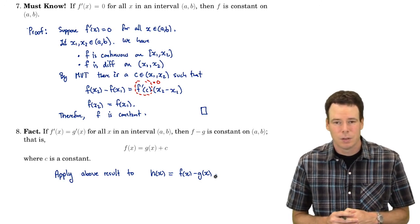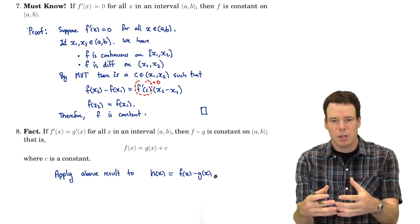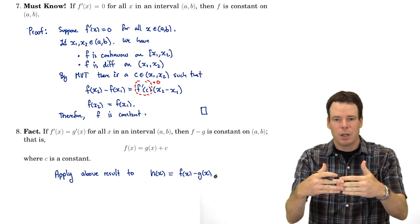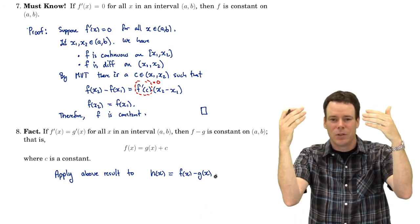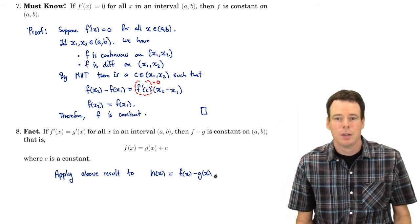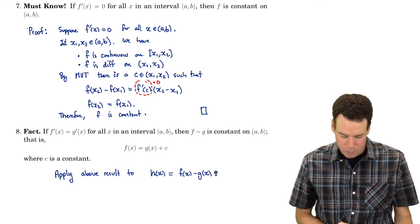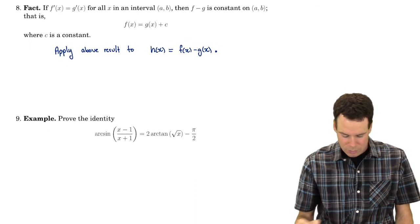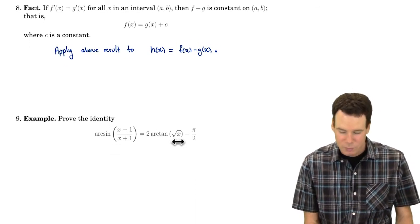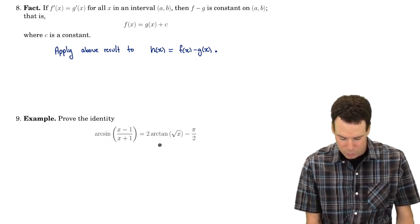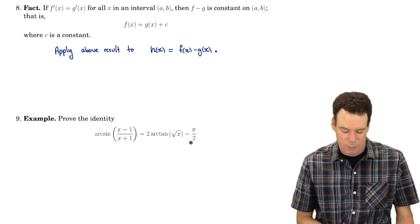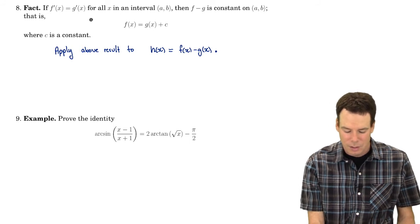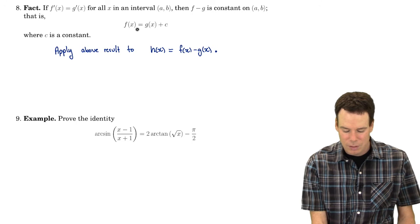This is a result used in integral calculus all the time. In integral calculus you start with a function and find an antiderivative — a function whose derivative is the one you started with. This result tells us that if you find one antiderivative, you can get any antiderivative by adding an arbitrary constant. Now let's see how to apply this to an interesting example: we can use it to prove trigonometric identities. We want to prove that arcsin((x-1)/(x+1)) = 2·arctan(√x) - π/2.